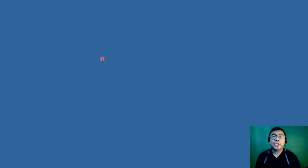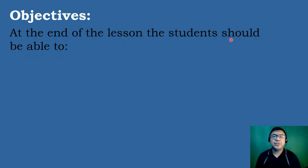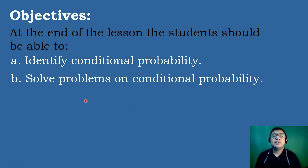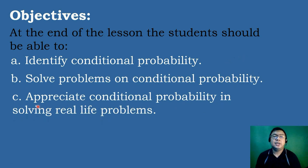These are the following objectives we need to attain for today's topic. Letter A, identify conditional probability. Letter B, solve problems on conditional probability. And Letter C, appreciate conditional probability in solving real-life problems.